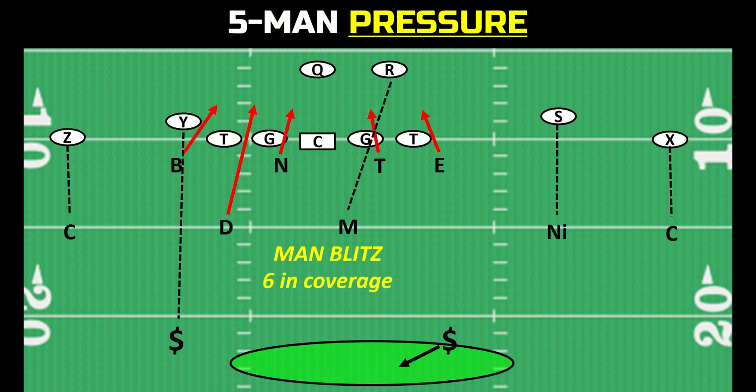A man blitz: you have five defenders covering all five skill players who are eligible to go out for a pass, minus the quarterback, and then you have your free safety. Six in coverage, five rushing, man-to-man.